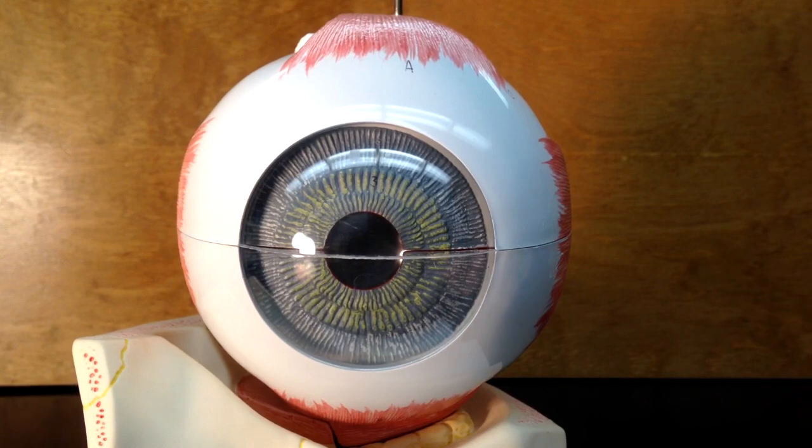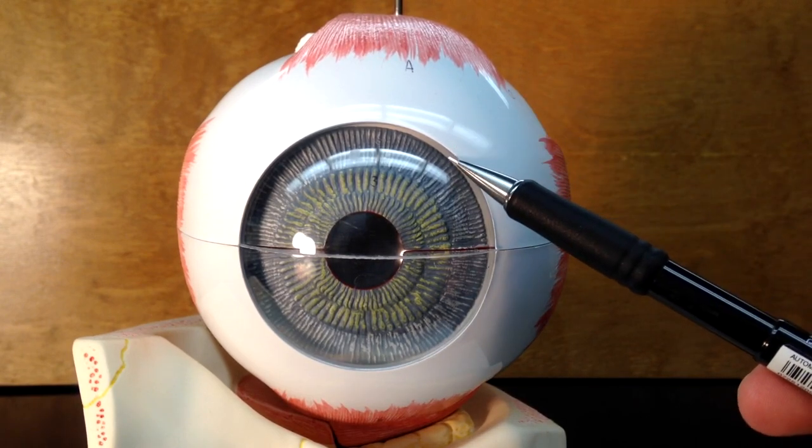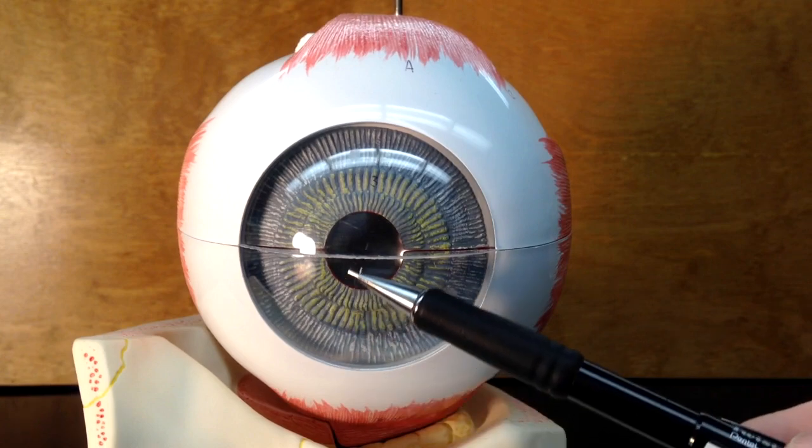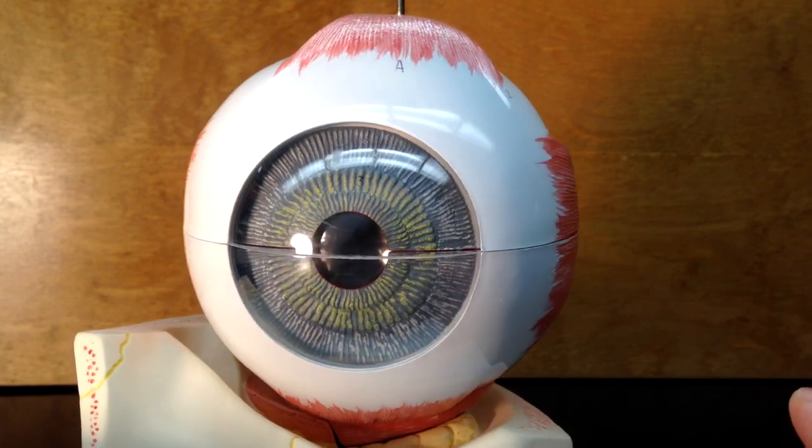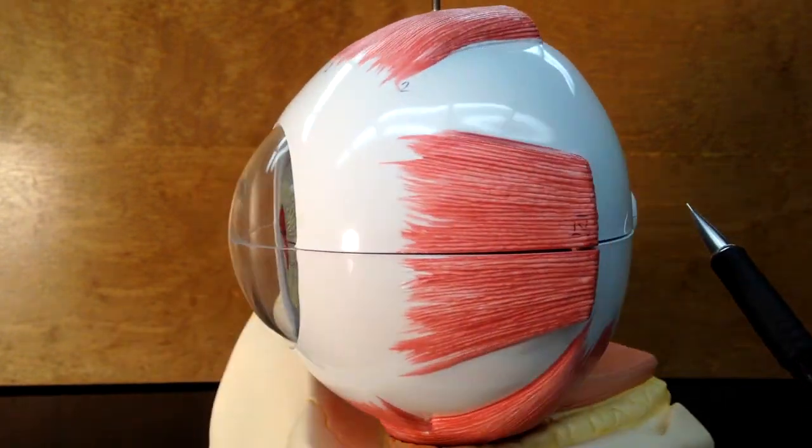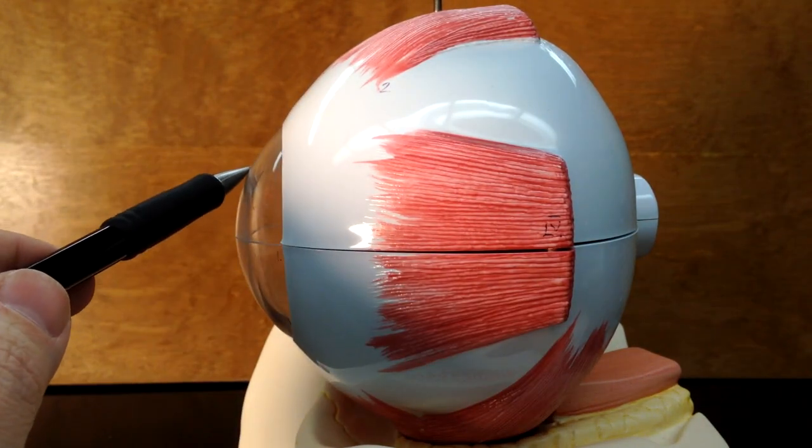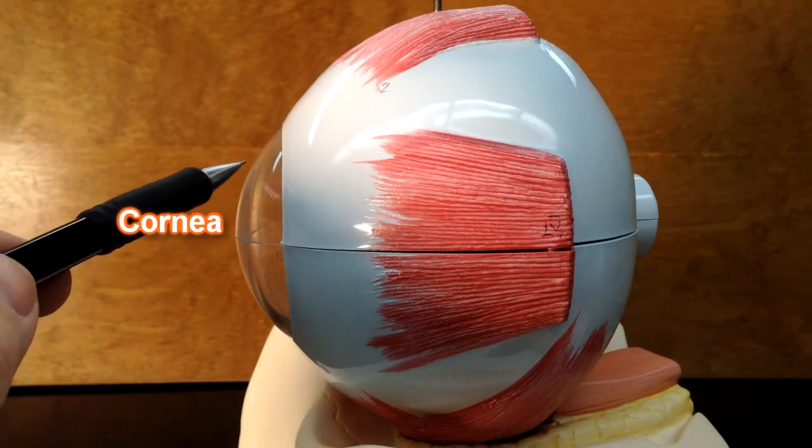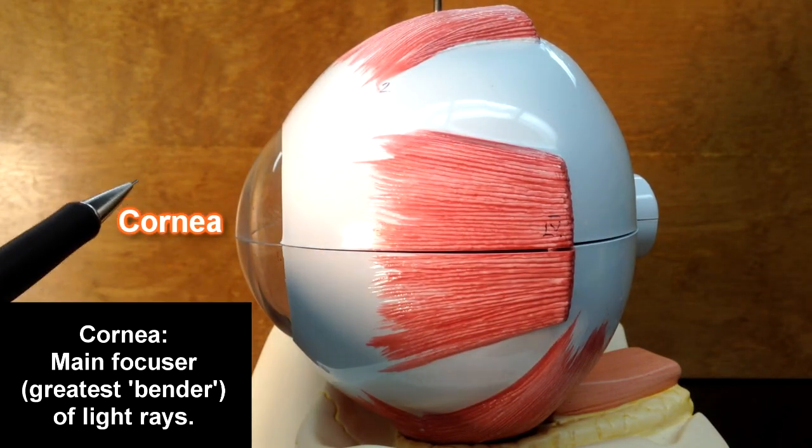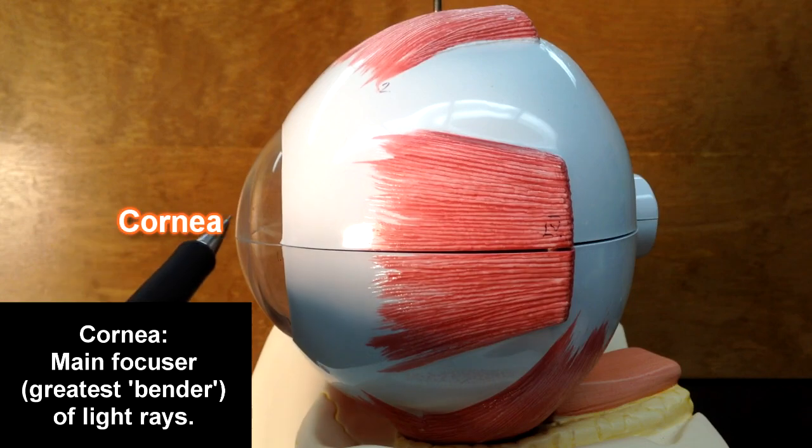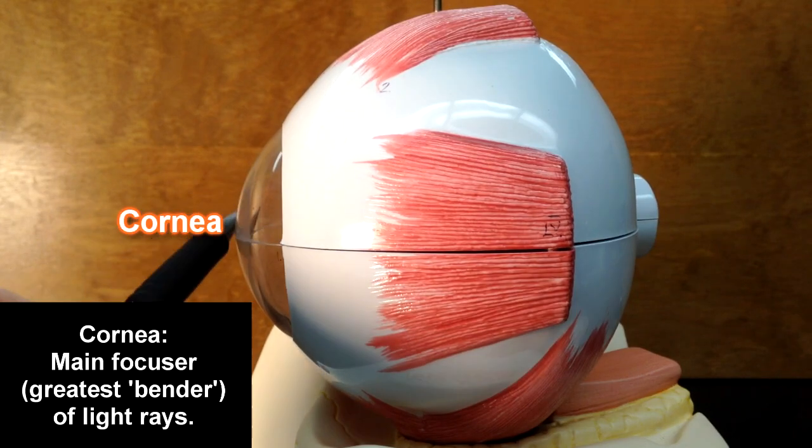Some of the structures we can see on the eyeball, this shiny structure right here, if I were to turn the eye to the side, we would be able to see that a little bit better. Look at that window right there. This is the cornea. This cornea right here is going to be the main focuser of light rays as they enter the eye. This is going to be the greatest bender of light rays.